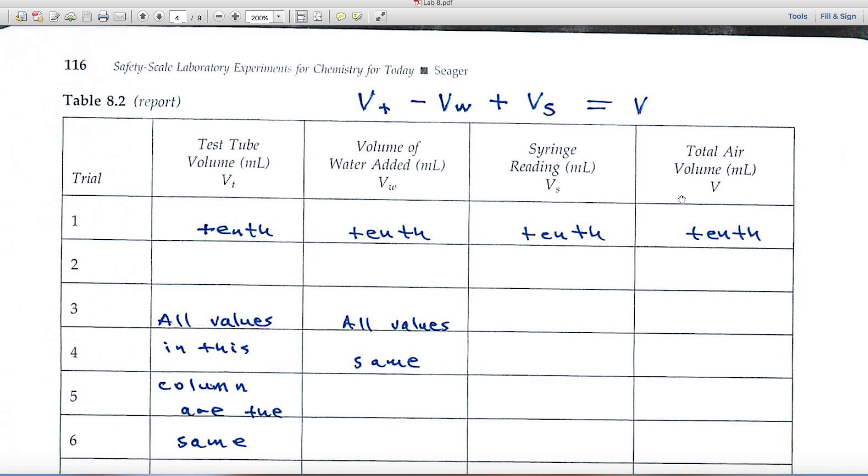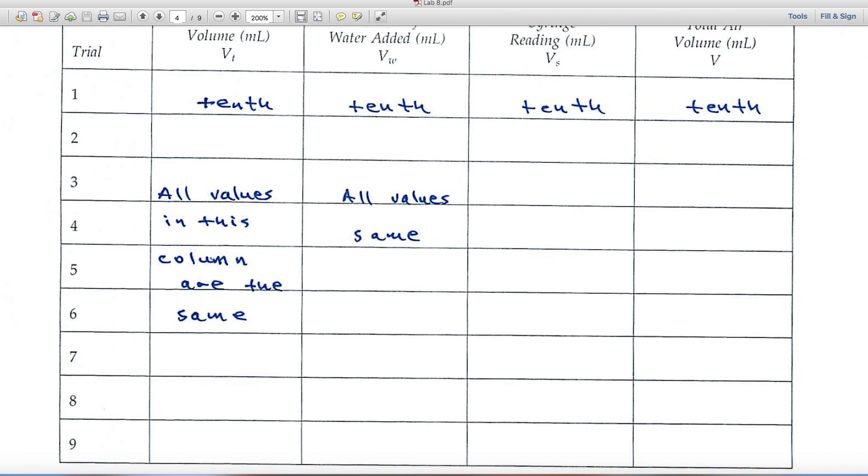Then finally, when you calculate the volume over here in the fourth column, you'll use this formula up at the top. The test tube volume minus the water volume that's added plus the volume in the syringe is equal to V over here in the fourth column. And you'll want to make sure that you record all of those to the tenth.